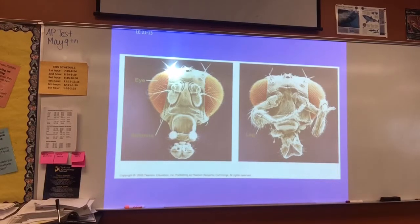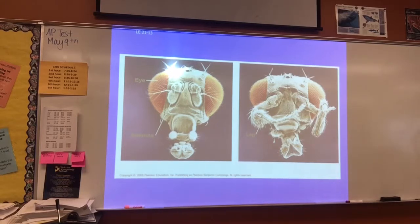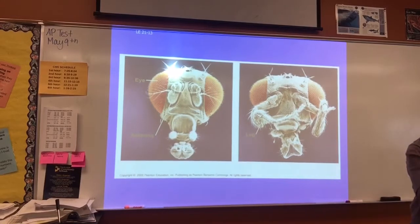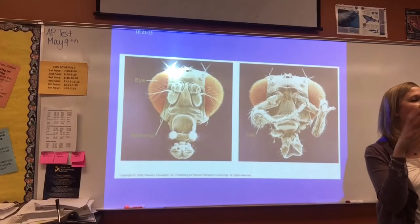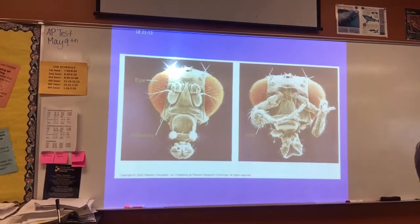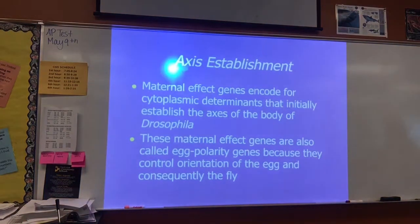The mutant has legs growing out from where the antennae should be — that's a mutant phenotype. When studying segmentation and how different body parts end up where they are, researchers look at organisms where things have gone awry. They look at where the mutations are, and that gives a clue as to what genes are controlling that region. Studying mutant organisms is helpful in figuring out what controls the normal wild-type organism.